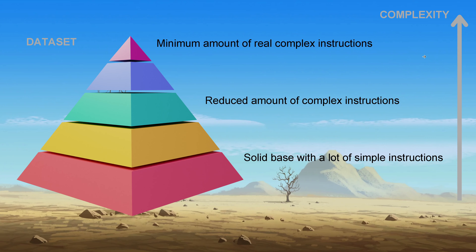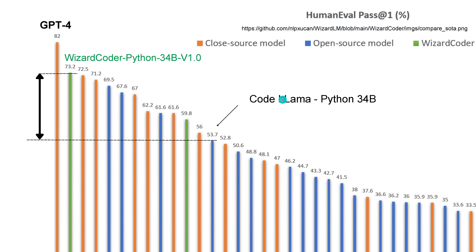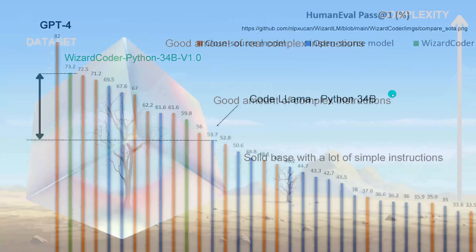So we need a better dataset - not a better model. Because both CodeLlama and WizardCoder were trained on CodeLlama, but the fine-tuning dataset for the Python fine-tuning was different. And it was the dataset that generated this jump.